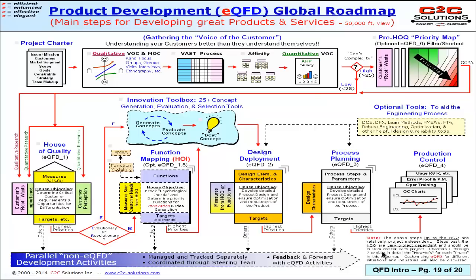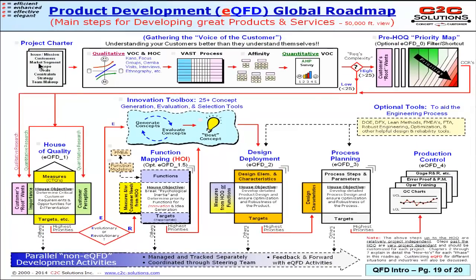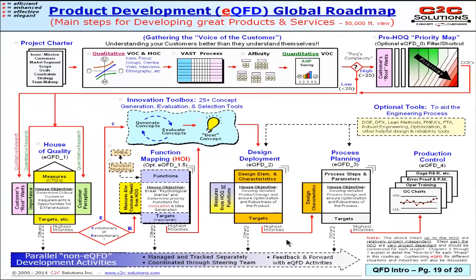One last note: the steps up to the house of quality are relatively project-independent. That means no matter what you're working on — a product, system, subsystem, component, software, service, or business process — the initial steps are pretty much the same. After the house of quality, the steps are very project-dependent, so what you're working on will dictate what those next steps look like.